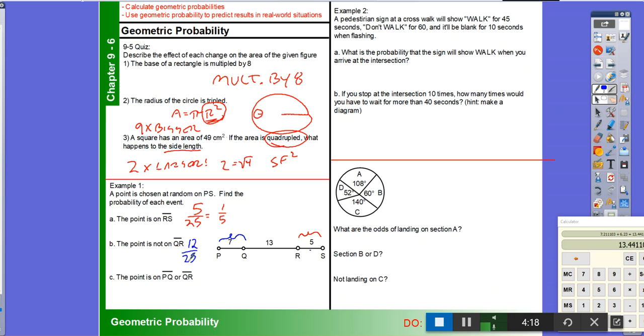Finally, what are the odds that the point is on PQ or QR? So in this case, we're looking at this segment right here. That's 20 of the possible 25, which is equal to 4/5.